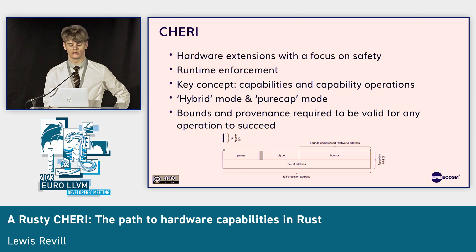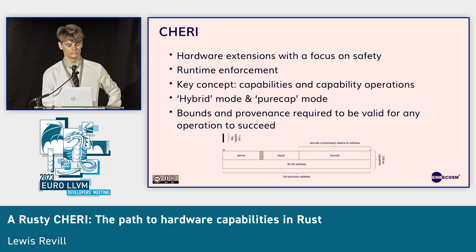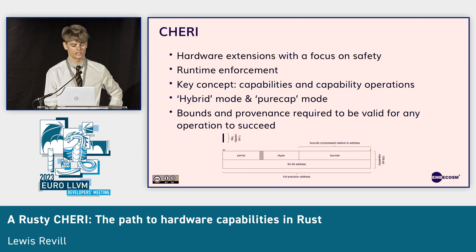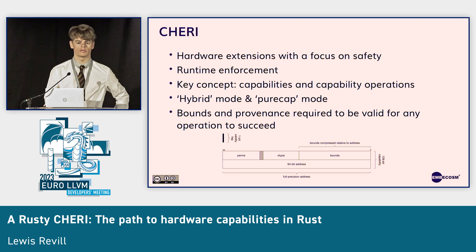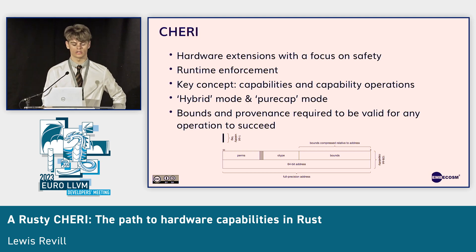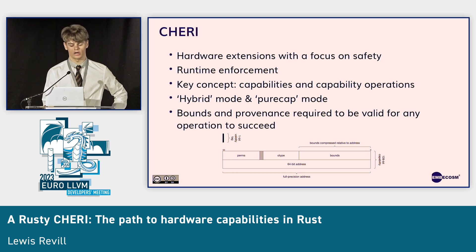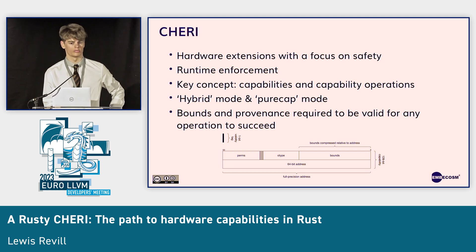Capability operations use this metadata to determine whether it's valid to perform that specific operation at runtime. It's worth mentioning that CHERI has the concept of hybrid mode as well as pure cap mode. In hybrid mode, capabilities have to be annotated as such, whereas in pure cap mode, all pointers are capabilities. For capability operations, the bounds and provenance are required to be valid for the operation to succeed at the point at which the operation takes place.